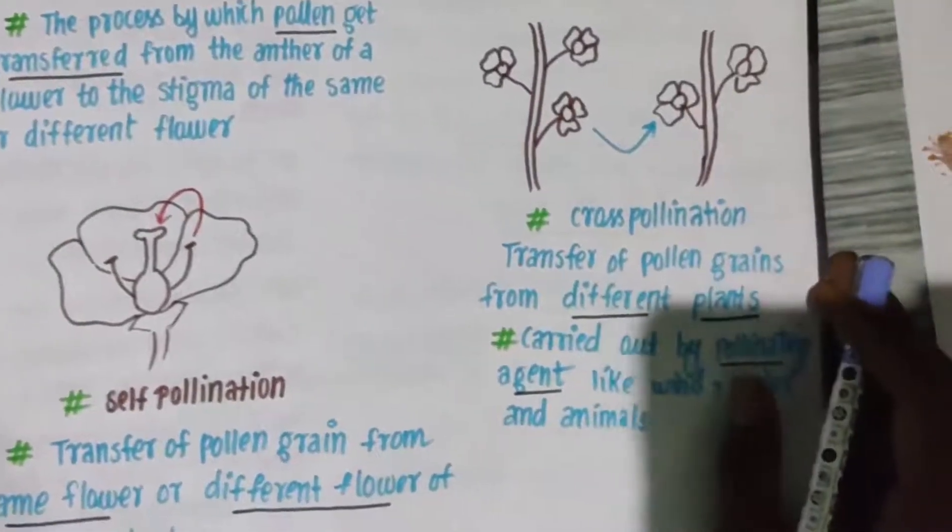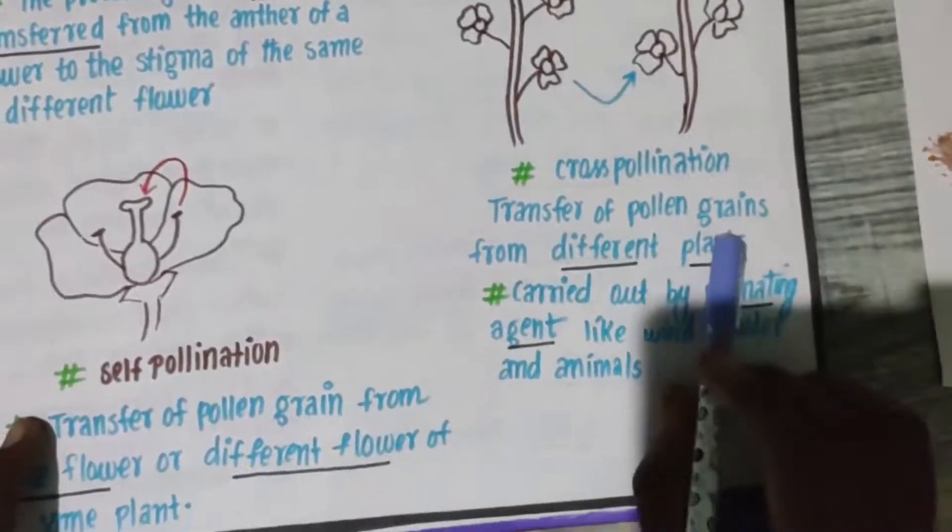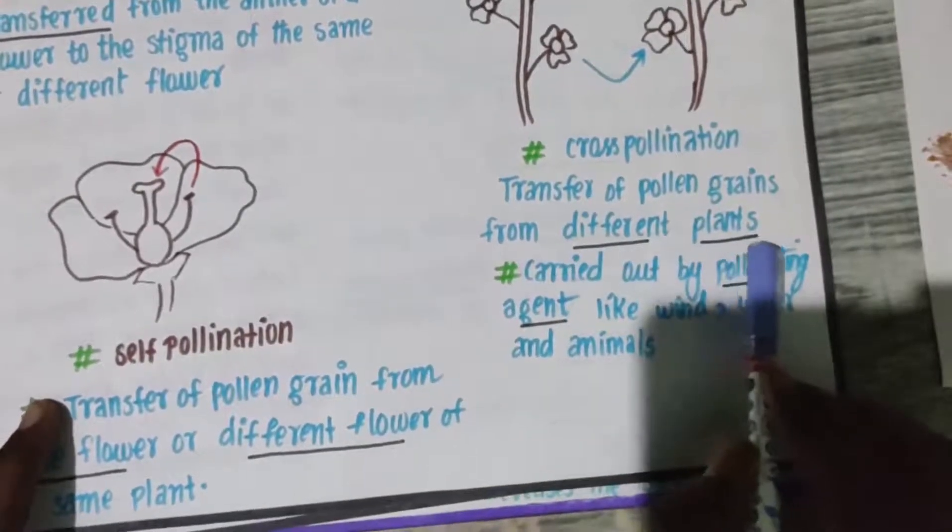Cross-pollination is between different plants. You can understand this point, right? Transfer of pollen grains from different plants.